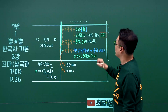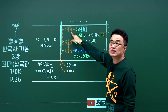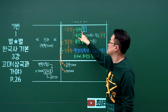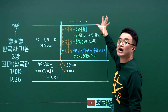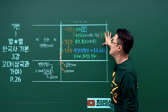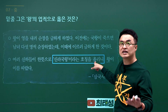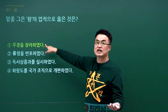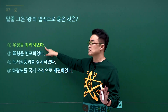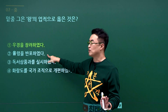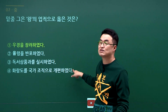신라 지증왕 문제입니다. 왕이라는 칭호를 처음 쓴 사람이 지증왕이고, 우경을 실시했습니다. 문제에서 신라 국왕이라는 칭호를 올렸다고 했으니 지증왕이고, 업적은 우경 장려입니다. 개념 공부를 제대로 해놓으시면 다 풀립니다. 율령 반포는 법흥왕, 독서삼품과는 원성왕, 화랑도 국가조직화는 진흥왕입니다.